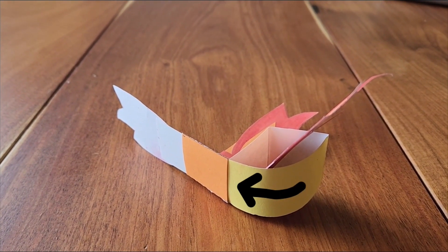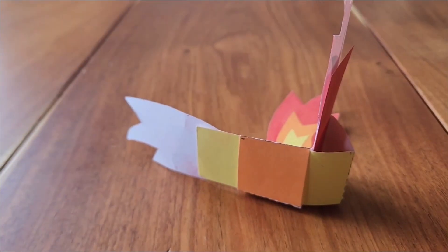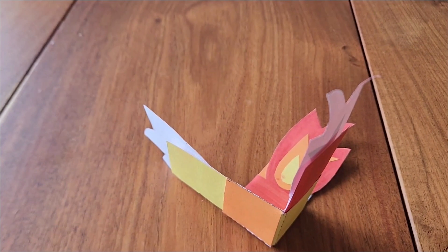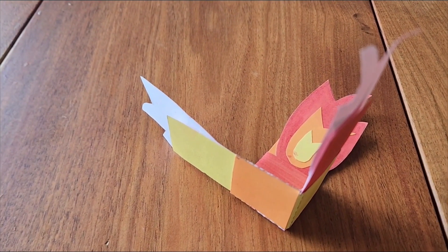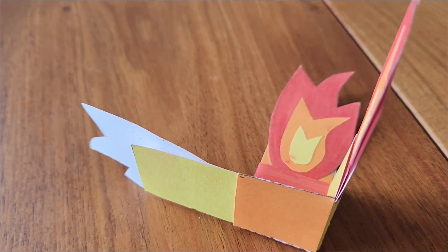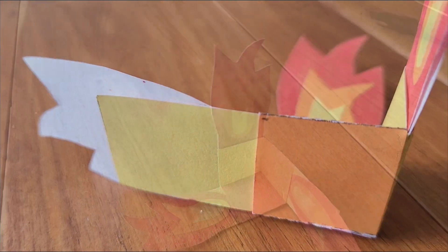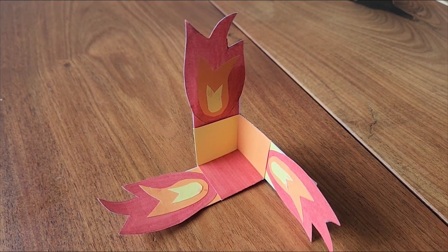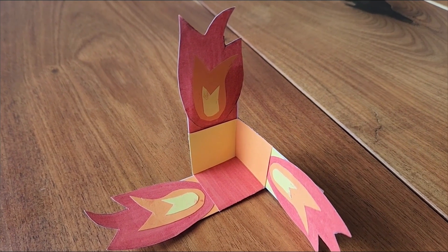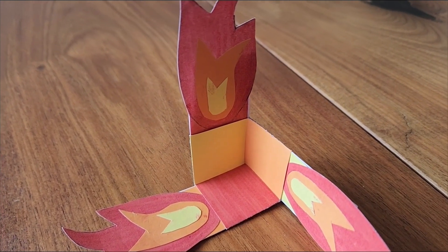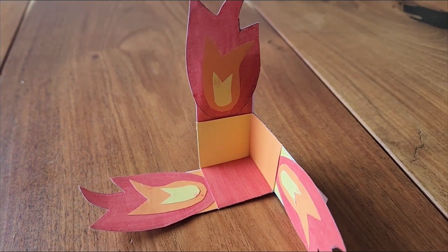Pull it until it sits flat against the red strip and flat inside the loop made by the orange strip. The Holy Spirit spinner is now ready to drop from any height to watch it spin to the floor.